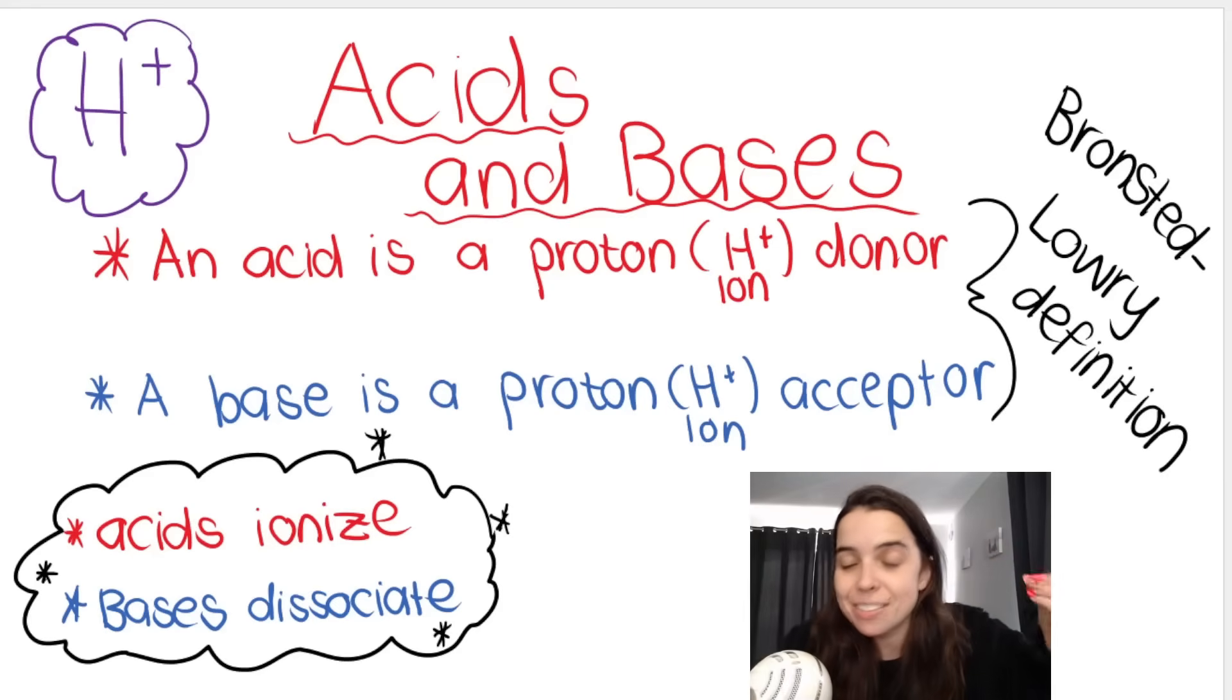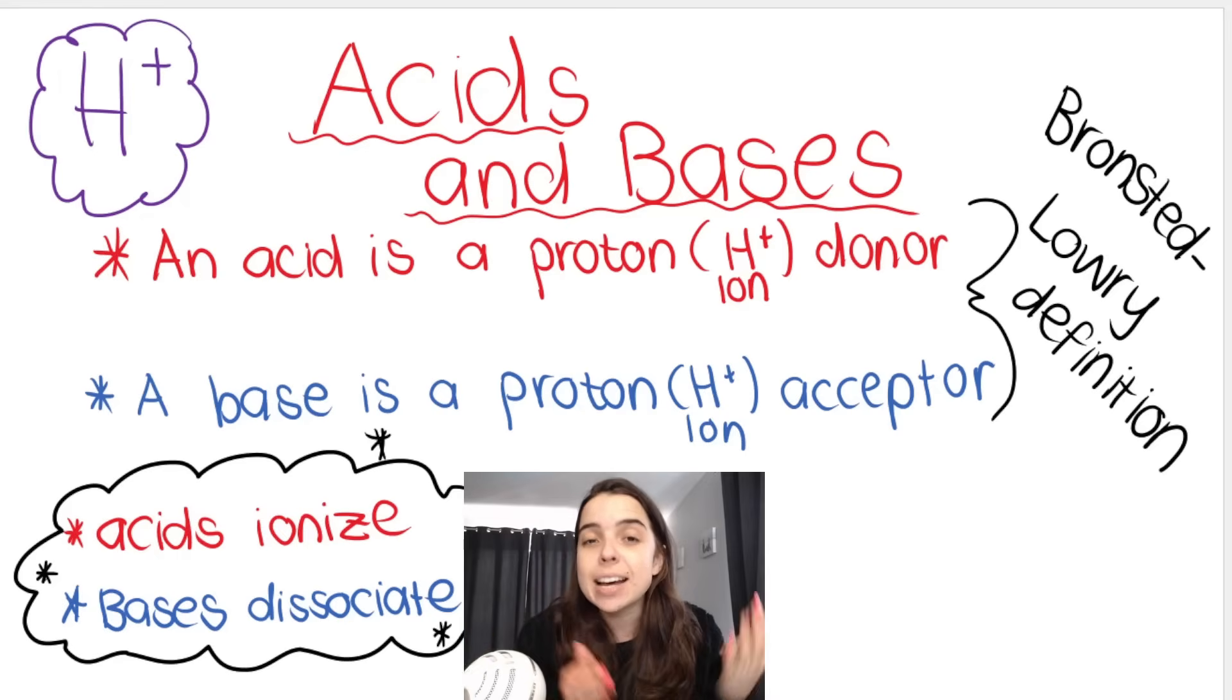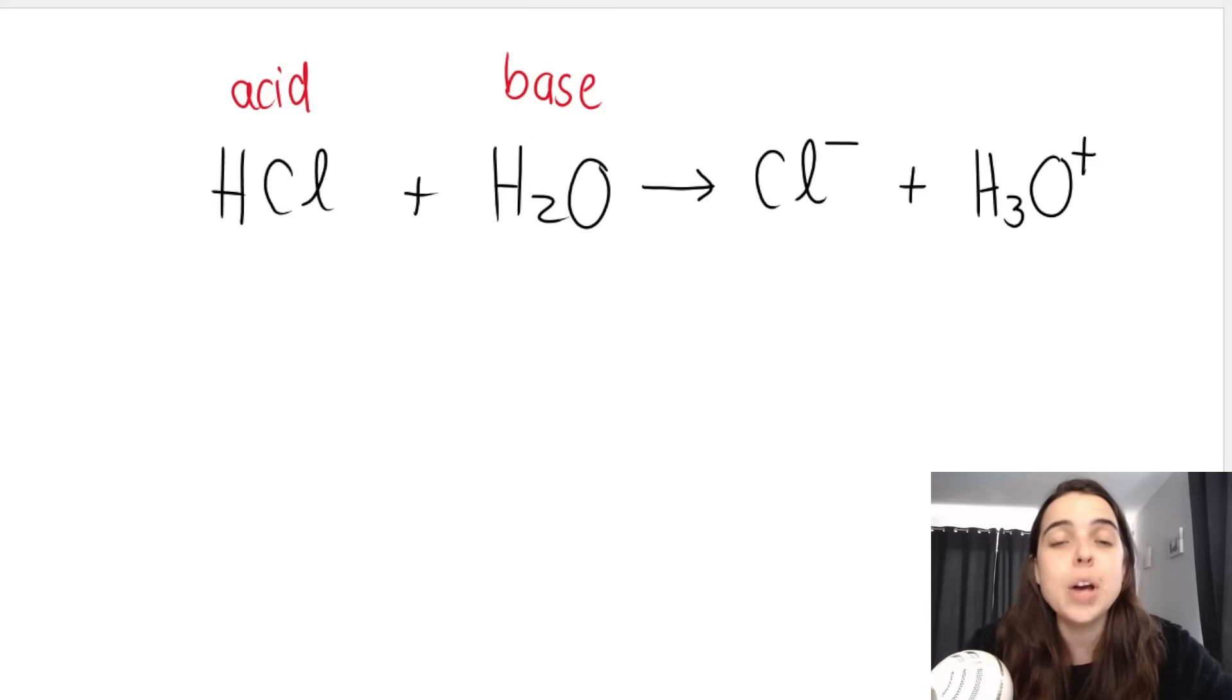The Bronsted-Lowry definition is very important for you to know. We often ask you to describe or define an acid in terms of the Lowry-Bronsted theory. However, don't forget about Arrhenius's theory because we can ask you to define an acid and a base in his terms as well. Another important thing: we say acids ionize and bases dissociate. There's a slight difference in the meaning of the word.